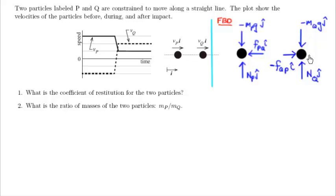And similarly for particle Q, I've got a normal force and gravity acting down and up, respectively. And then I have the force of impact. I call it lowercase fpq and lowercase fqp. So fpq is the force on particle P due to particle Q. And likewise, fqp is the force on particle Q due to particle P.